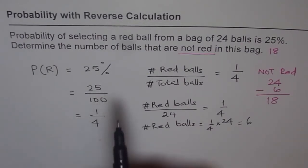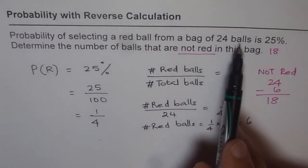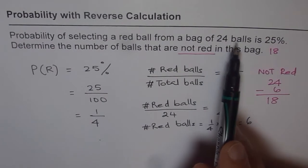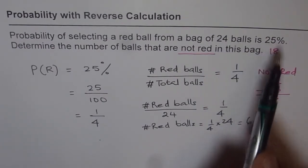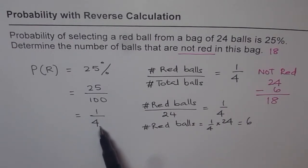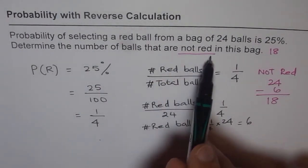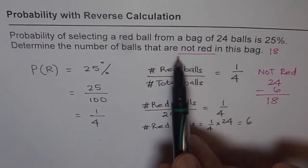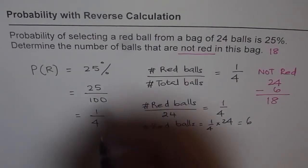Let's review what we did. The question was: probability of selecting red balls from a bag of 24 balls is 25 percent. Total number of balls is 24, and 25 percent is one-fourth. The ratio of red balls to total number of balls is one out of four. We need to determine balls that are not red — read carefully, because some students mistakenly write 6 as their answer, which would be wrong.